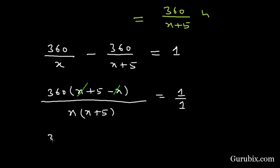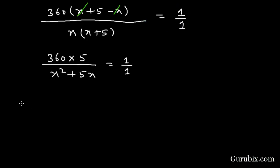Then we have 360 times 5 over x square plus 5x equals 1. Cross multiplying, x square plus 5x minus 1800 equals 0.